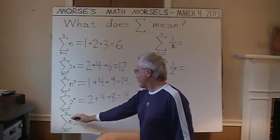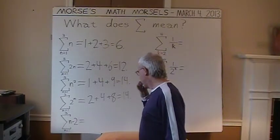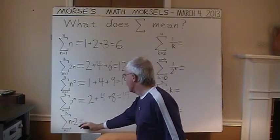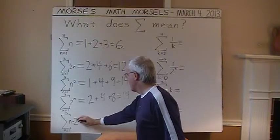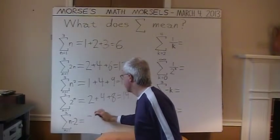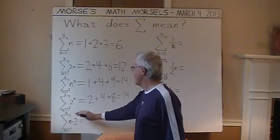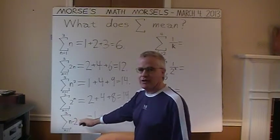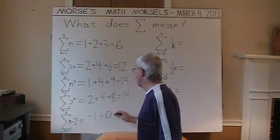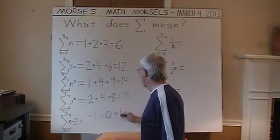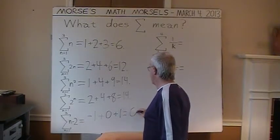One more example on the left side. N minus 2. Yeah, why just stay at N? Alright, N equals 1. So 1 minus 2 is negative 1. And then when N equals 2, continuing the incrementing, 2 minus 2 is 0. And finally, N equals 3. 3 minus 2 is 1. Add these 3 numbers. The sum is 0.